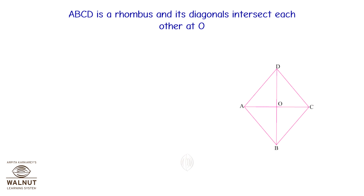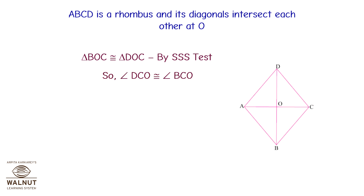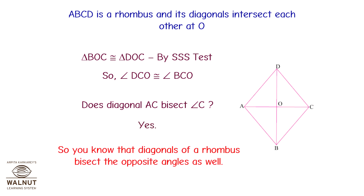ABCD is a rhombus and its diagonals intersect at O. Triangle BOC is congruent to triangle DOC by the SSS test, so angle DCO is congruent to angle BCO. Does diagonal AC bisect angle C? Yes. So the diagonals of a rhombus bisect the vertex angles as well.